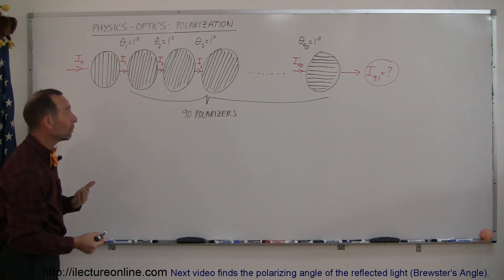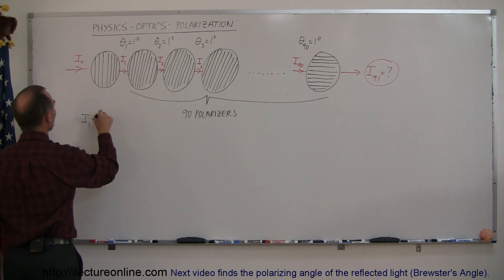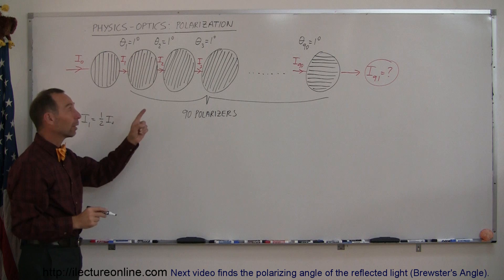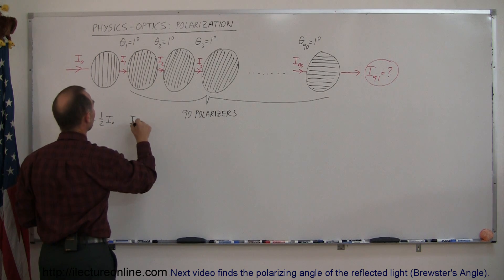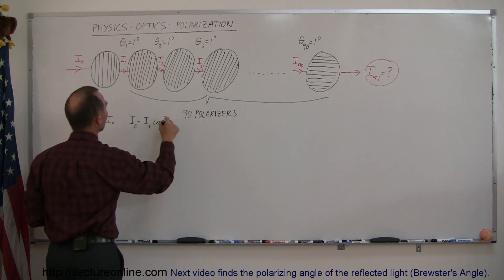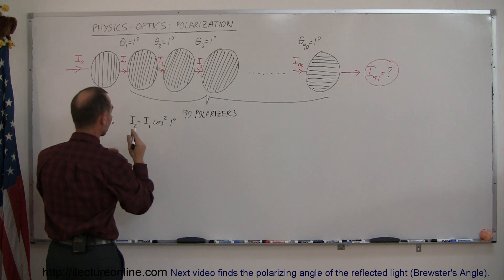Let's go ahead and start the way we normally would. We can say that i sub 1 is equal to 1 half i sub 0. And then we can go find out what i sub 2 is equal to. So i sub 2 is equal to i sub 1 times the cosine squared of 1 degree. That would be the angle of the first difference of the polarizers.